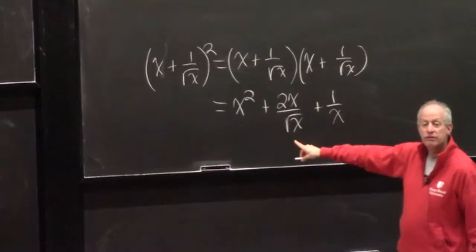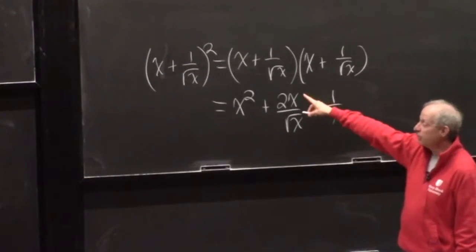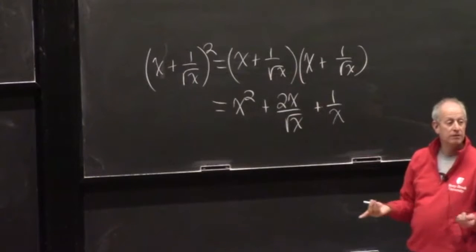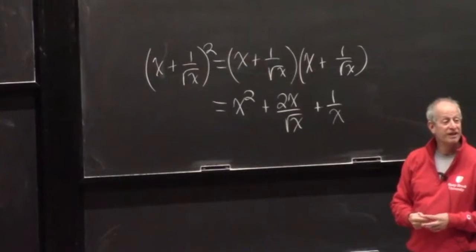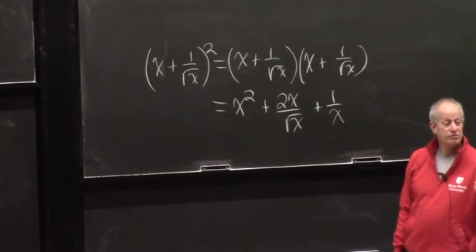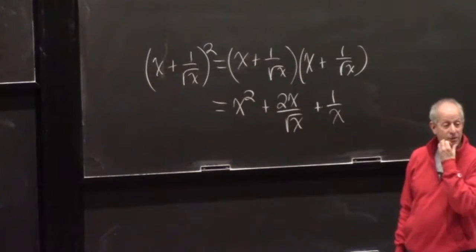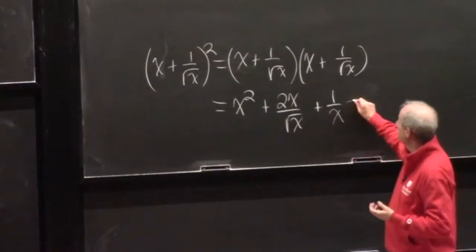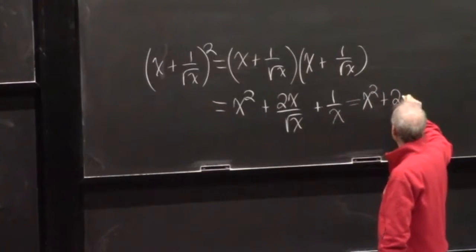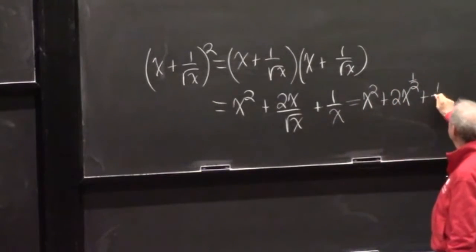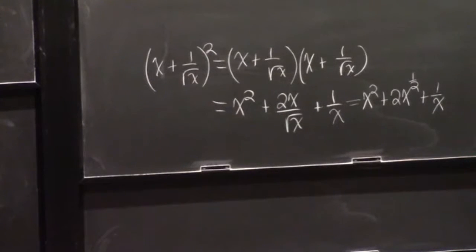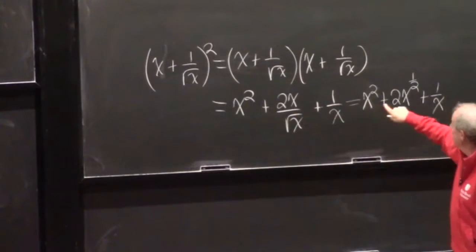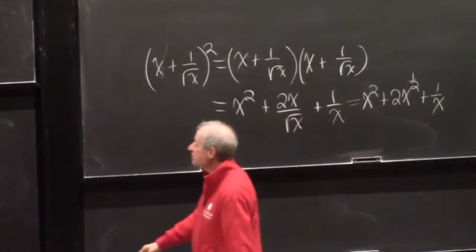What is x over the square root of x? It's x to the 1 over x to the 1/2. When dividing, you subtract the powers: 1 minus 1/2 gives x to the 1/2. So we get x squared plus 2x to the 1/2 plus 1 over x.